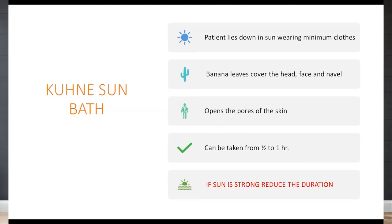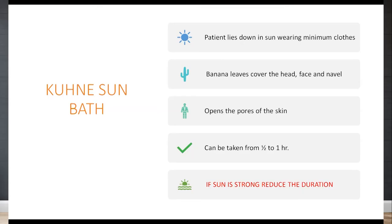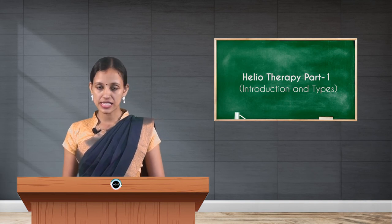The next type is kunesh sunbath. Here the patient lies down in the sun wearing minimum clothes, and banana leaves are used to cover the head, face, and navel region. It mainly helps to open the pores of the skin. If the sunlight is very strong, the duration can be reduced. Normally, kunesh sunbath is taken for 30 minutes to 1 hour.